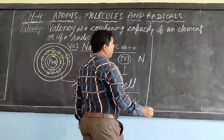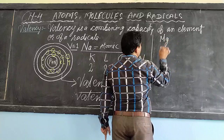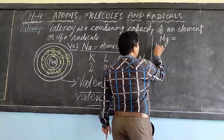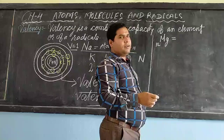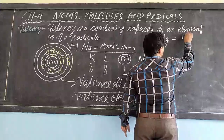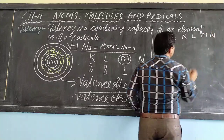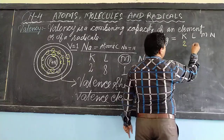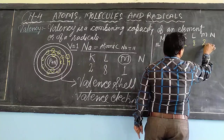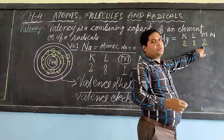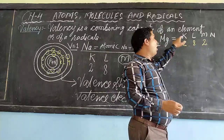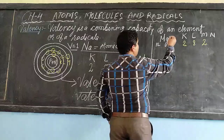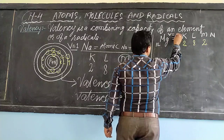Let us take another example of magnesium, which is denoted by Mg, and its atomic number is 12. We will do the electronic configuration to find the valency of magnesium. The shells are K, L, M, N. In the K shell 2, L shell 8, and in the M shell it will be 2. In the valence shell of magnesium, only 2 electrons are present.